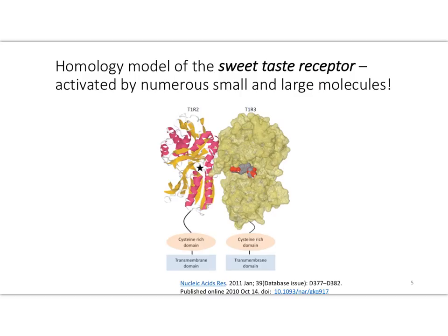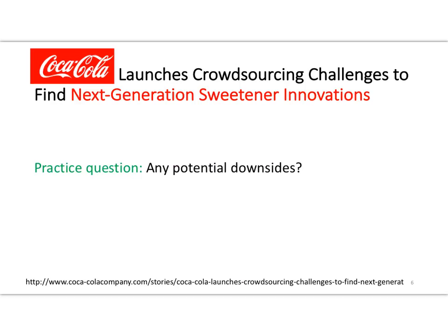We taste sweetness because of activation of a sweet taste receptor in the mouth — the tongue area — that happens to be activated by a large number of large and small molecules. This image shows a homology model of the taste receptor. We already know of lots of compounds that can activate the taste receptor and give us the pleasure of tasting something sweet. Given a challenge launched in the summer of 2017 by Coca-Cola, we can imagine there will be many more coming on the scene.